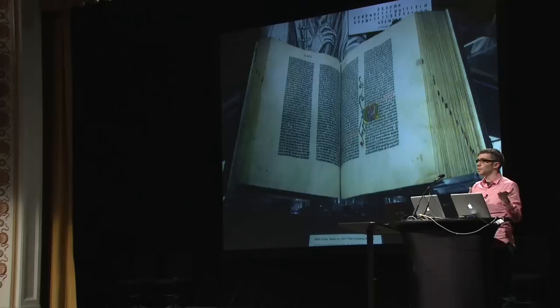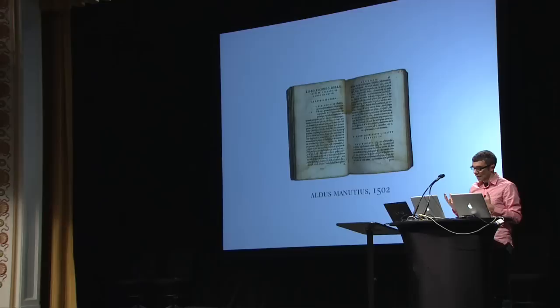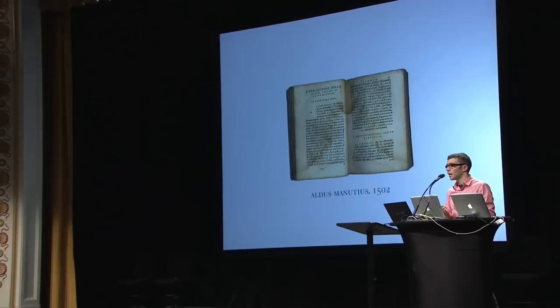You couldn't carry this around; you couldn't go lay in the park and enjoy this book. And then this gentleman, Aldus Manutius, in 1502 said: why don't we make these things smaller so we can put them in our pockets? That's when we got the mobile book — essentially the equivalent of when we got the mobile phone today.